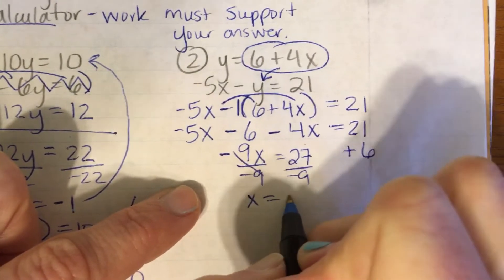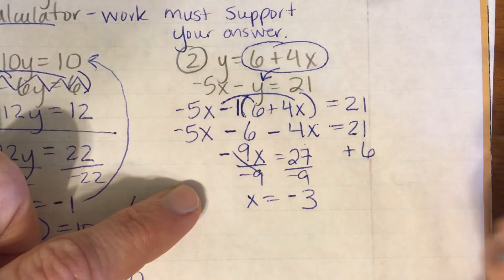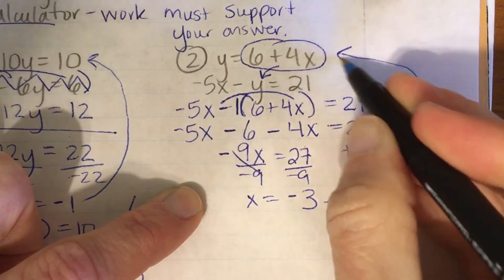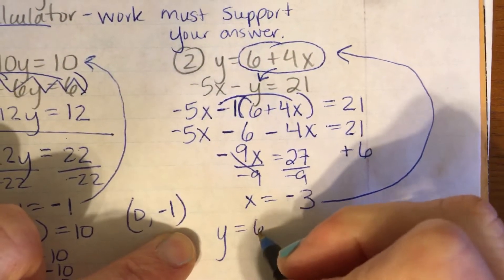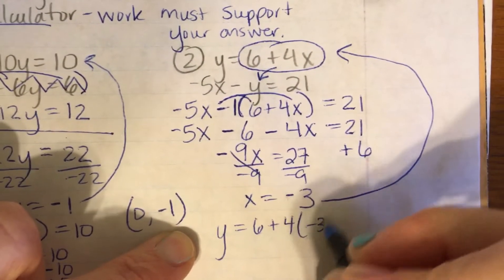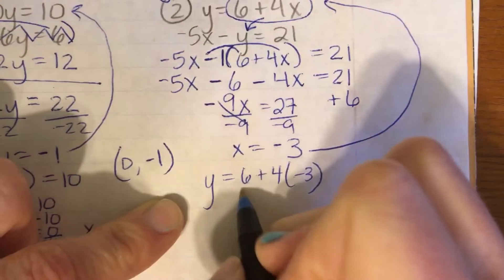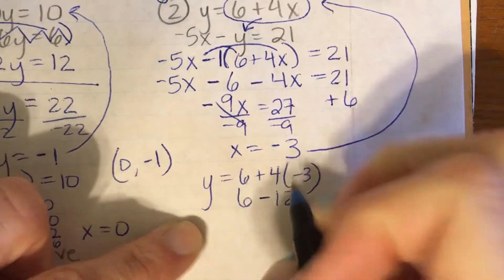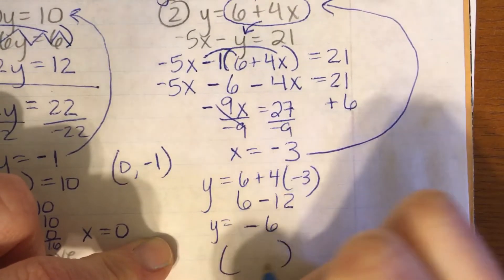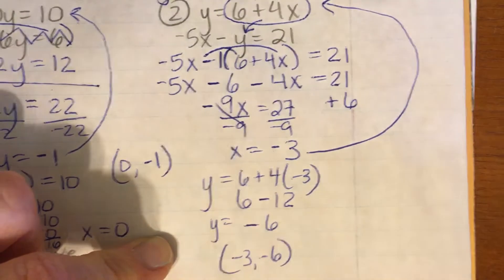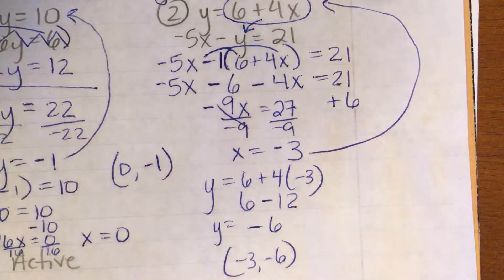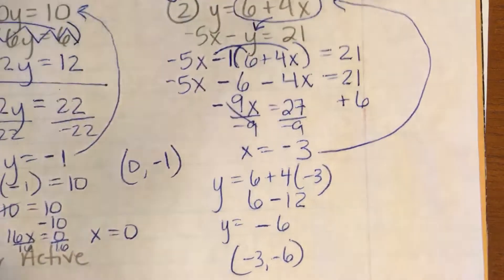Divide by negative 9. And 9 goes into 27 three times and it's going to be negative. Alright, I'm going to plug it back in. Y equals 6 plus 4 times negative 3 because I know what x is now. X is negative 3. Alright, so 6 minus 12 gives you negative 6. So my answer is negative 3, negative 6.